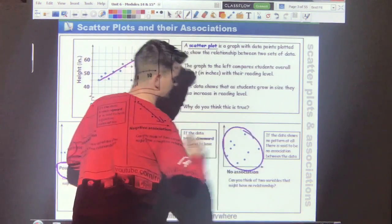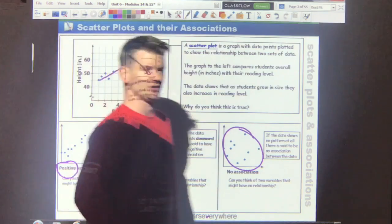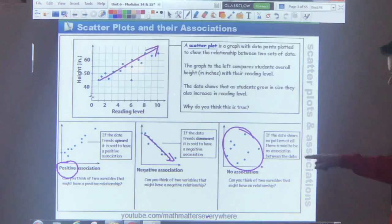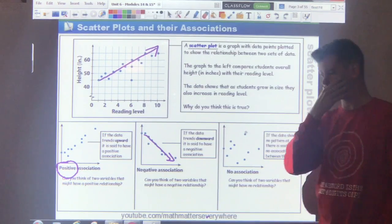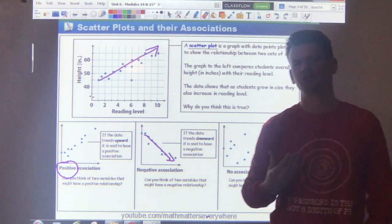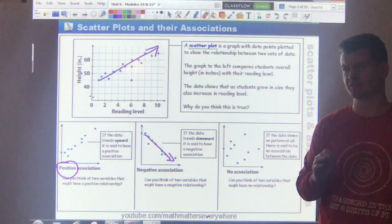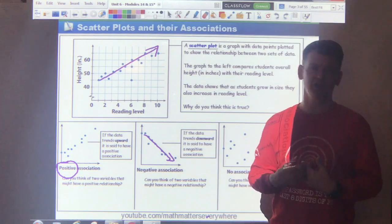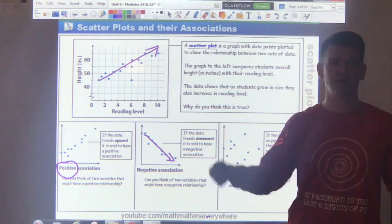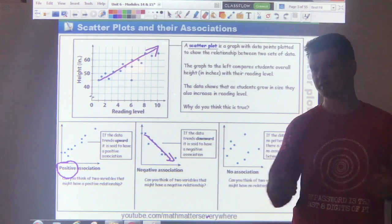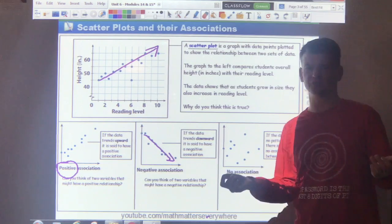We also have something that's known as no association whatsoever. If you look at the data that we have graphed right here, the dots are kind of all over the place. When something has no association, it's because those variables have nothing to do with each other. Such as the number of people in a room wearing white t-shirts and the number of clouds in the sky. Those have nothing to do with each other at all whatsoever.